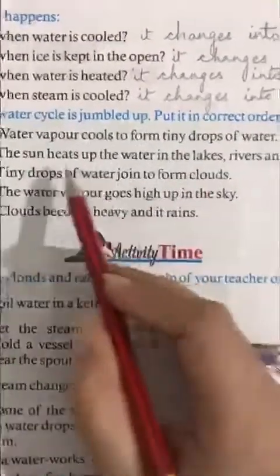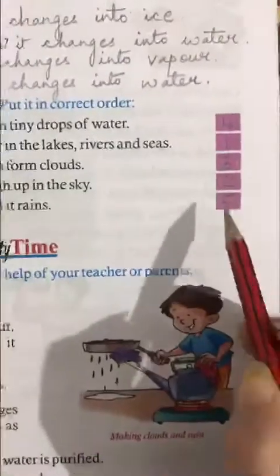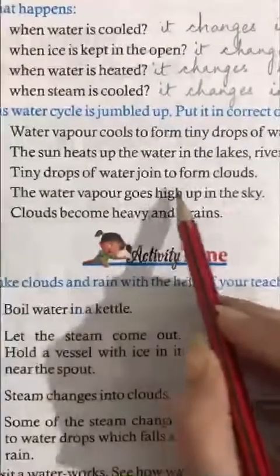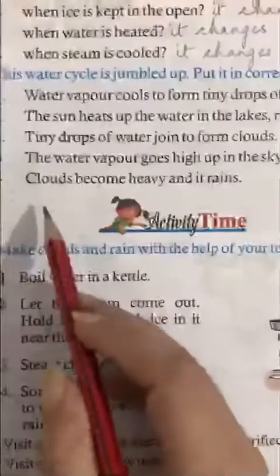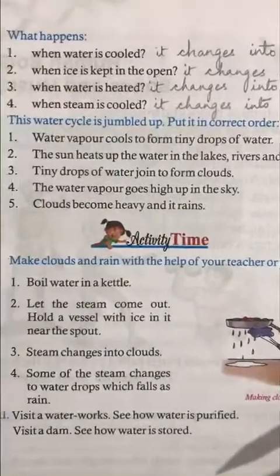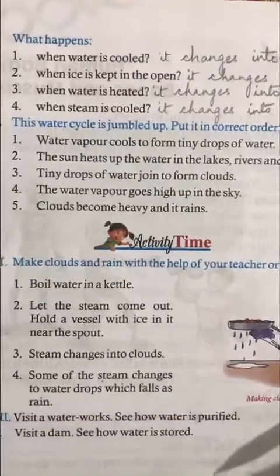So the correct order is: number one — the sun heats up the water; number two — water vapour goes high up in the sky; number three — tiny drops of water join to form clouds; number four — water vapour cools to form tiny drops of water; number five — clouds become heavy and it rains. Children, you are supposed to do these exercises in your book, send me the completed work, and learn these exercises. Thank you.